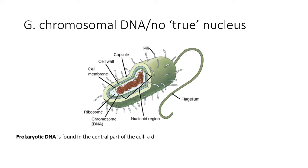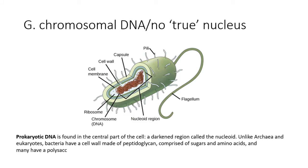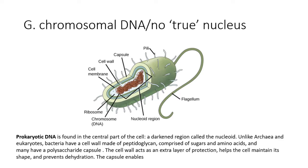Prokaryotic DNA is found in the central part of the cell, a darkened region called the nucleoid. Unlike archaea and eukaryotes, bacteria have a cell wall made of peptidoglycan, comprised of sugars and amino acids, and many have a polysaccharide capsule. The cell wall acts as an extra layer of protection, helps the cell maintain its shape, and prevents dehydration. The capsule enables the cell to attach to surfaces in its environment.